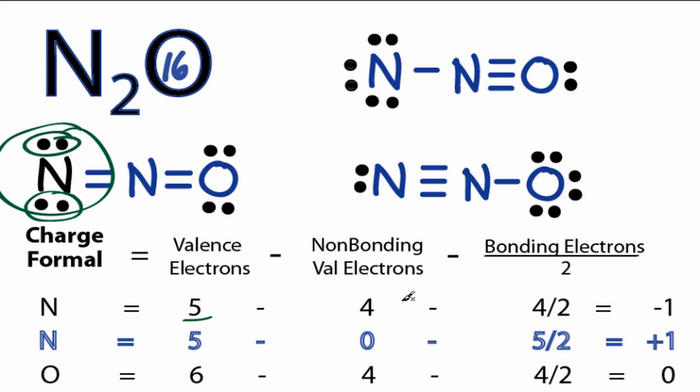For bonding, we have 2 bonds here, so that's 4 valence electrons divided by 2. The formal charge for this nitrogen is negative 1.